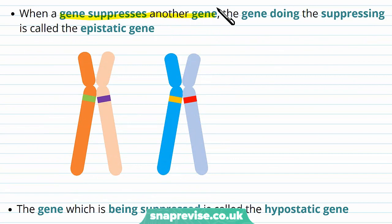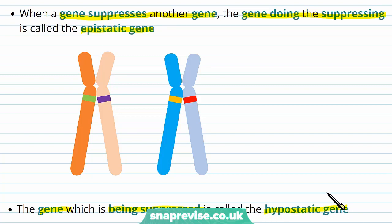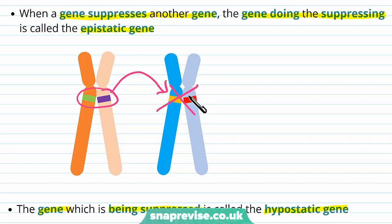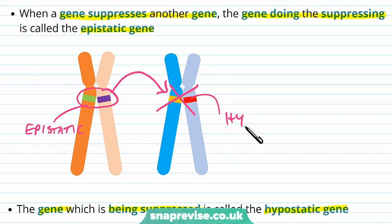When a gene suppresses another gene — stopping it from being expressed — the gene doing the suppressing or masking is called the epistatic gene, and the gene being suppressed is called the hypostatic gene. For example, if the green and purple genes inhibit the expression of the yellow and red genes, the green and purple genes are the epistatic genes and the yellow and red genes are the hypostatic genes.